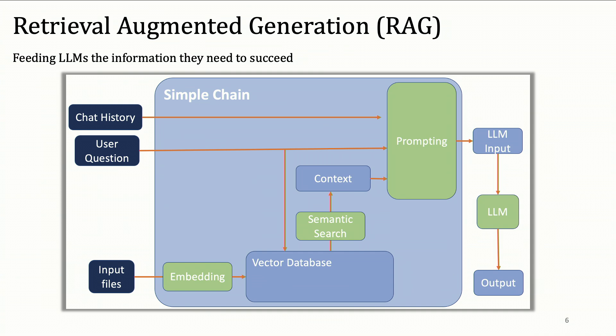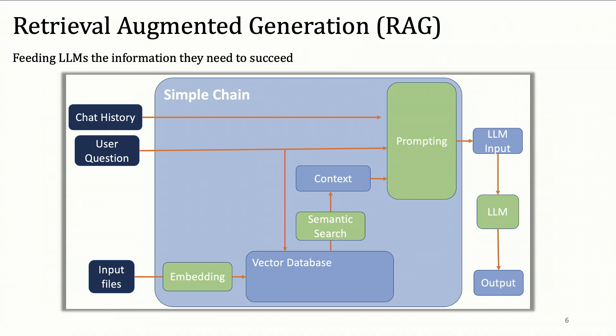So we turn to retrieval augmented generation, also known as RAG. Yesterday we had a lot of presentations about this, so I'll quickly gloss over what it is. It's basically feeding large language models the information they need to succeed. We have some input files that we feed into our database, then query relevant context to the question and feed that together into a prompt to the large language model that produces an output.